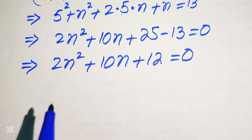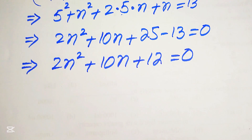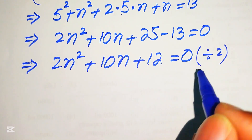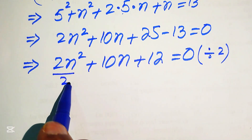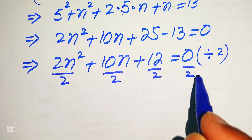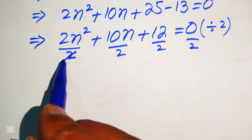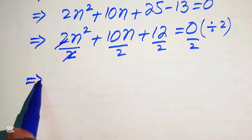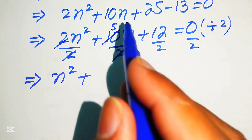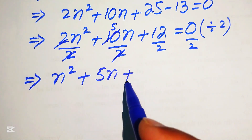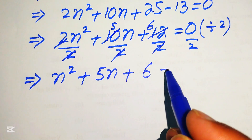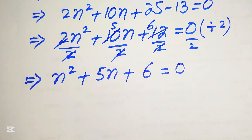Each term is divisible by 2, so we divide both sides by 2. The 2s cancel out and we obtain n² + 5n + 6 = 0.